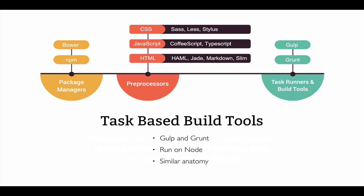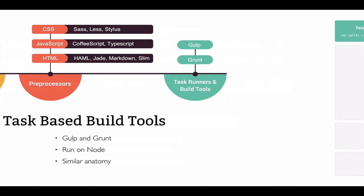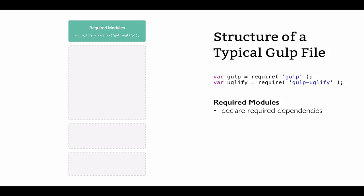Now we get down to our actual build tools, such as Gulp and Grunt. Both run on Node and both have a similar anatomy. Taking a look at a typical Gulp file, you can see that it's broken down into four separate components — this is a generalization, not a hard rule. At the top of the file is the area where we declare our required dependencies, things such as Gulp and any related modules that we need for our build.